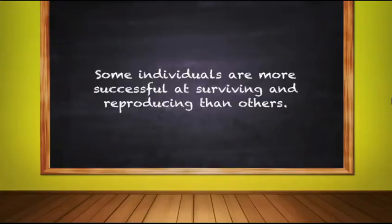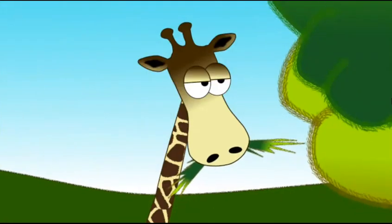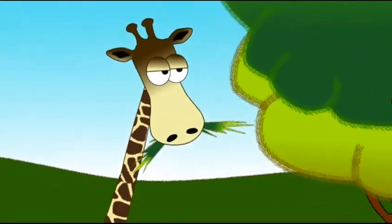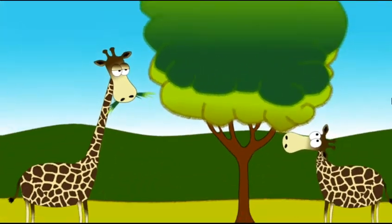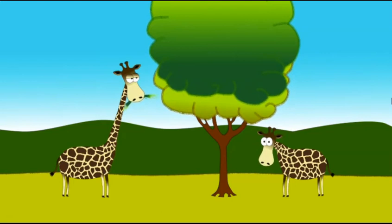Condition number three: some individuals are more successful at surviving and reproducing than others. In the case of our giraffes, the long-neck individual did not acquire its neck by stretching to grab leaves. Instead, individuals within the population were born with a longer neck. Because a longer neck allowed them to reach food that was otherwise unattainable, it gave them an advantage.